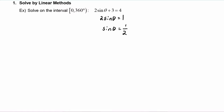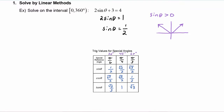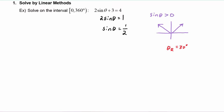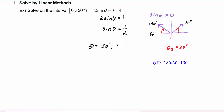So now we have sine of theta is equal to 1/2. Now you have to do some analysis, because the sine of theta is positive — that tells us that our angle could be in quadrant one or quadrant two. We use our special angle reference chart to see that theta r is going to be 30 degrees. Putting theta r in both quadrants, we get 30 degrees or 150 degrees, since for that second angle we start at 180 degrees and subtract 30 degrees. So the solution is theta equals 30 degrees or 150 degrees.